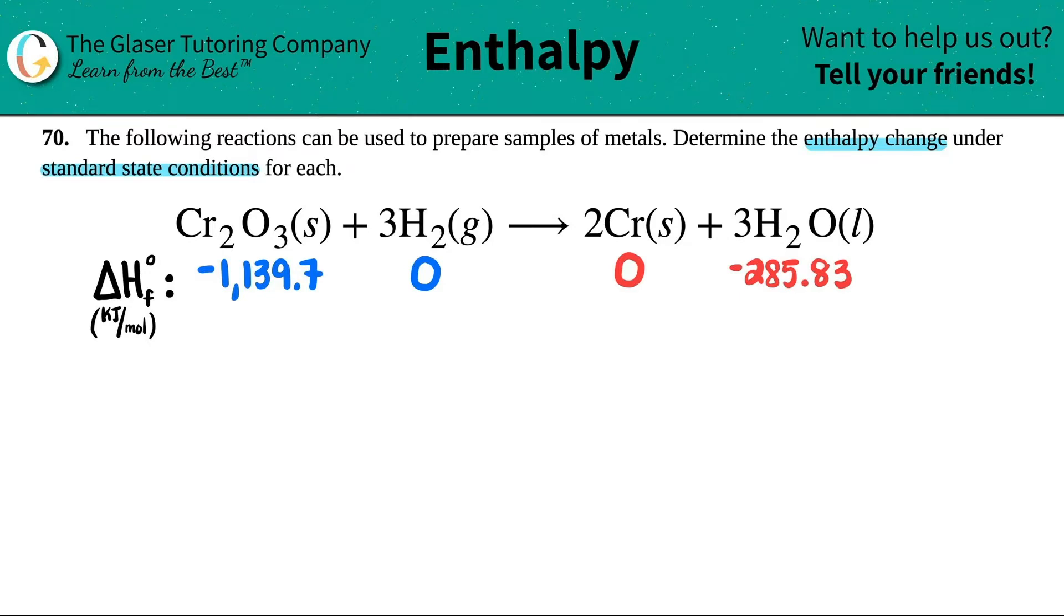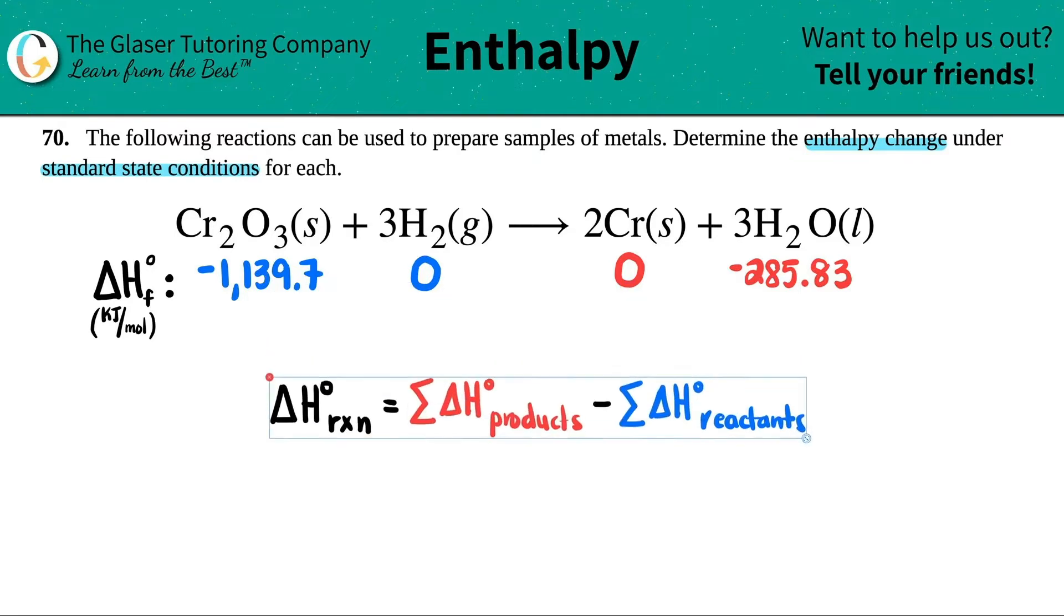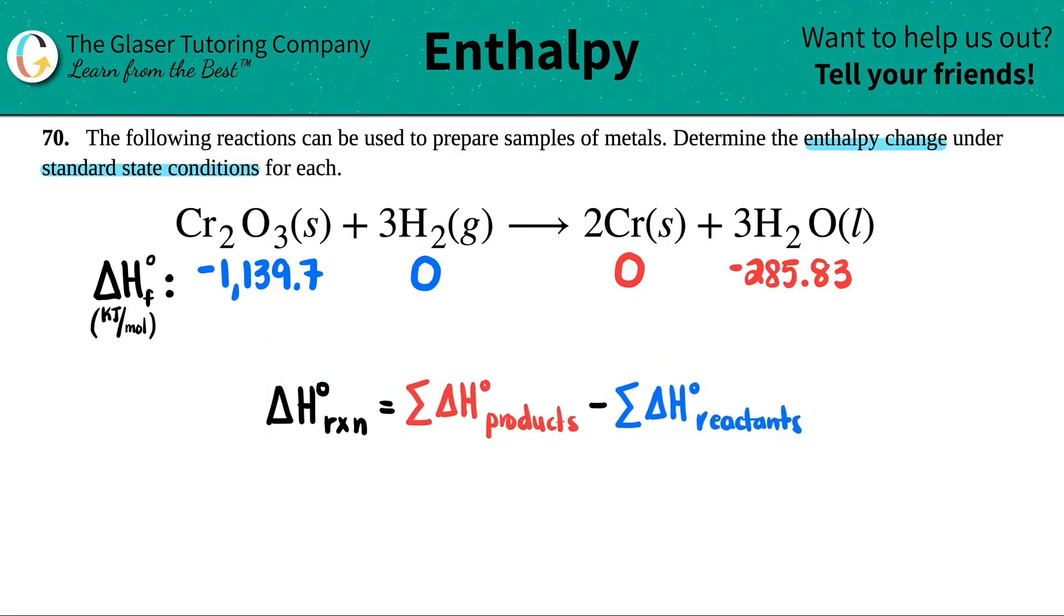Now since we do this, we just have to find the enthalpy change. It's a simple formula. The delta H of the whole reaction, which is what we have to find, is just the sum of the delta H's of the products minus the sum of delta H of the reactants. These little signs just mean sum, aka addition. We have to add up to get one number on the reactant side and one number on the product side, and then we just plug it into our formula.